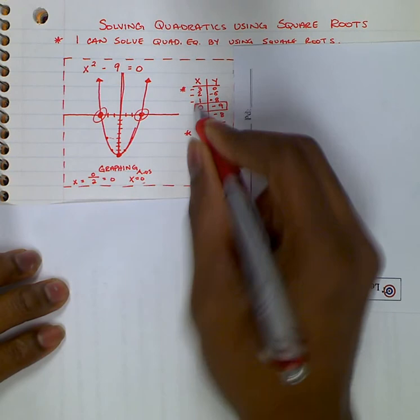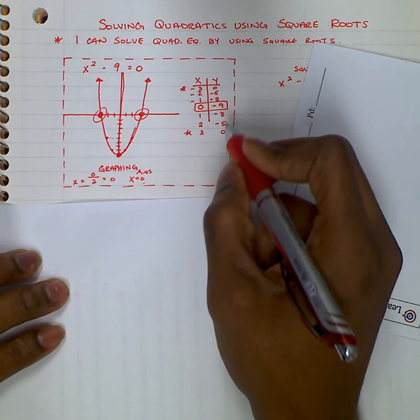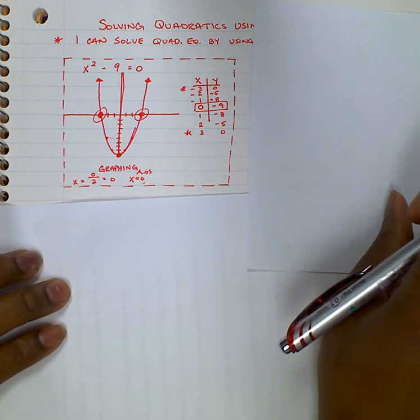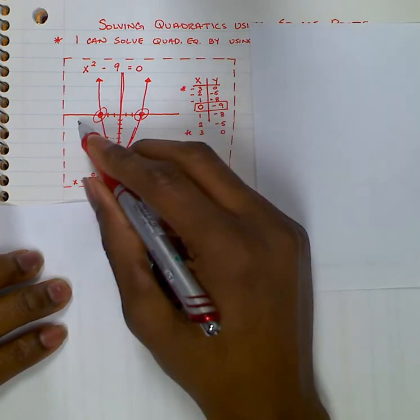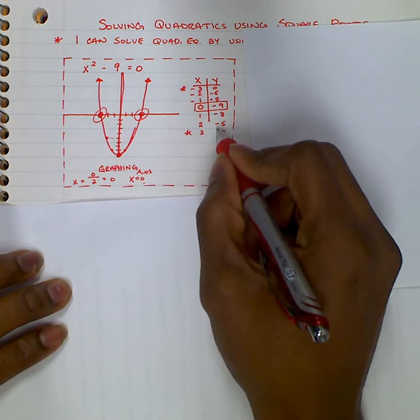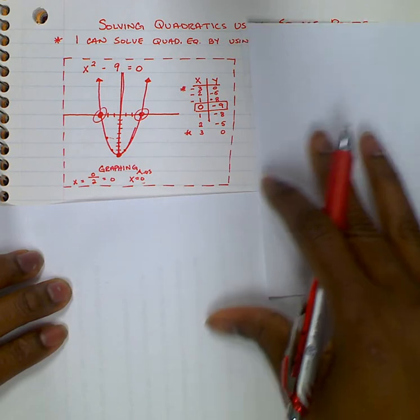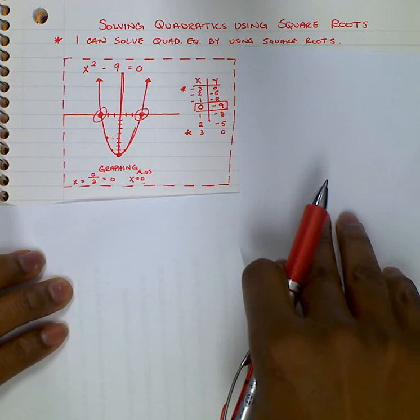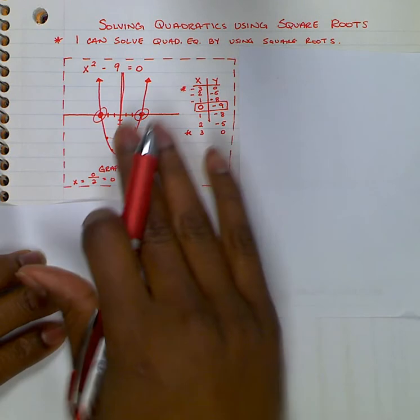Then choose points on the left and right side of our vertex, plug those in, and plot those as well. We could find our solution where our graph crossed the x-axis. And here we can see that our solution happens at 3 and negative 3. If you need help with graphing, make sure you go back and review the practice prompts and the video notes as well. I want you to see that this is the solution and this is how we did it.